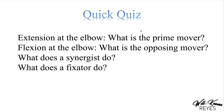Let's do a quick quiz to check your understanding. Answer these in the comments or on a separate sheet of paper. First: extension at the elbow — what is the prime mover? Second: flexion at the elbow — what is the antagonist? Third: what does a synergist do? Fourth: what does a fixator do? I'll put the answers in the description.